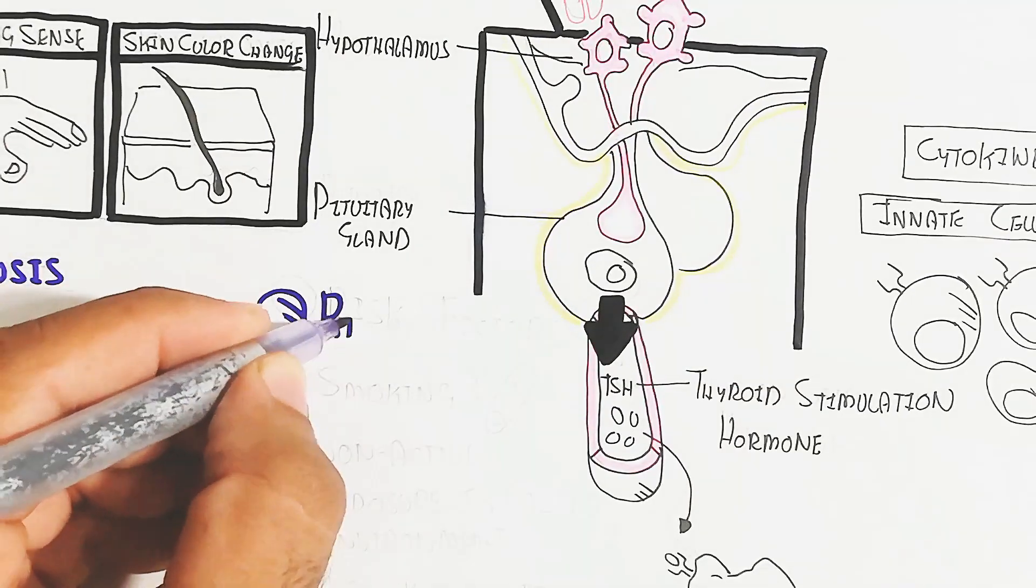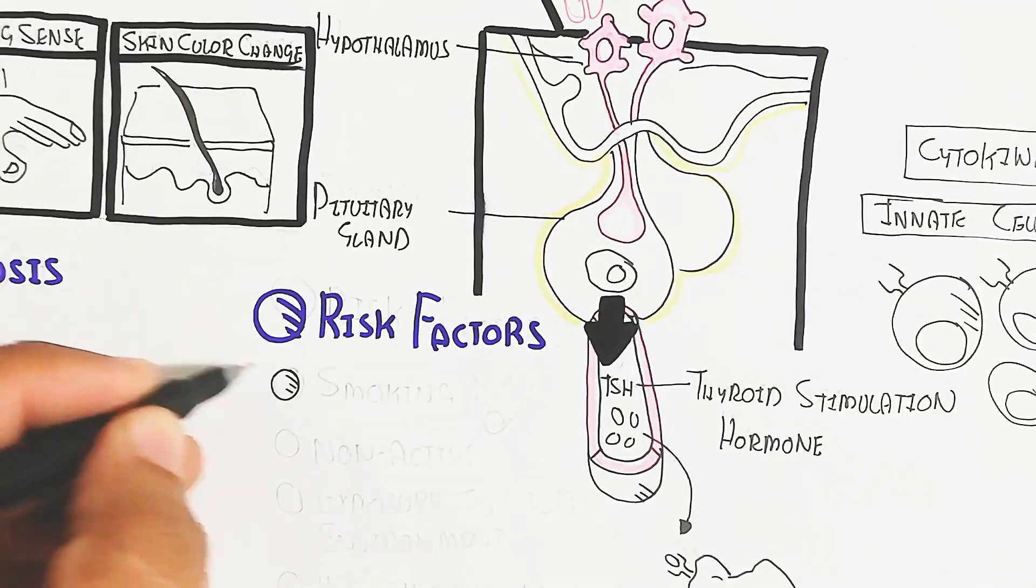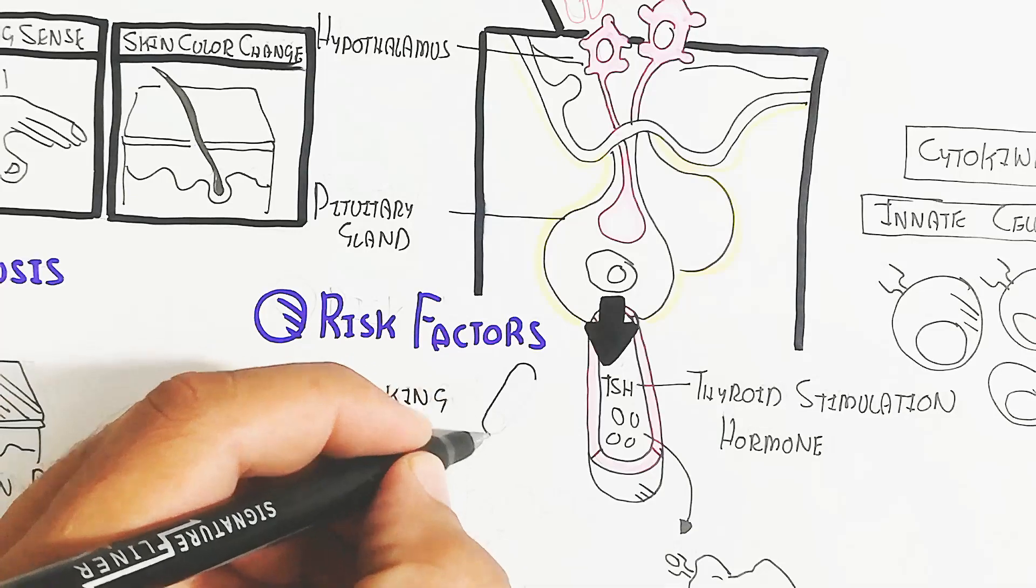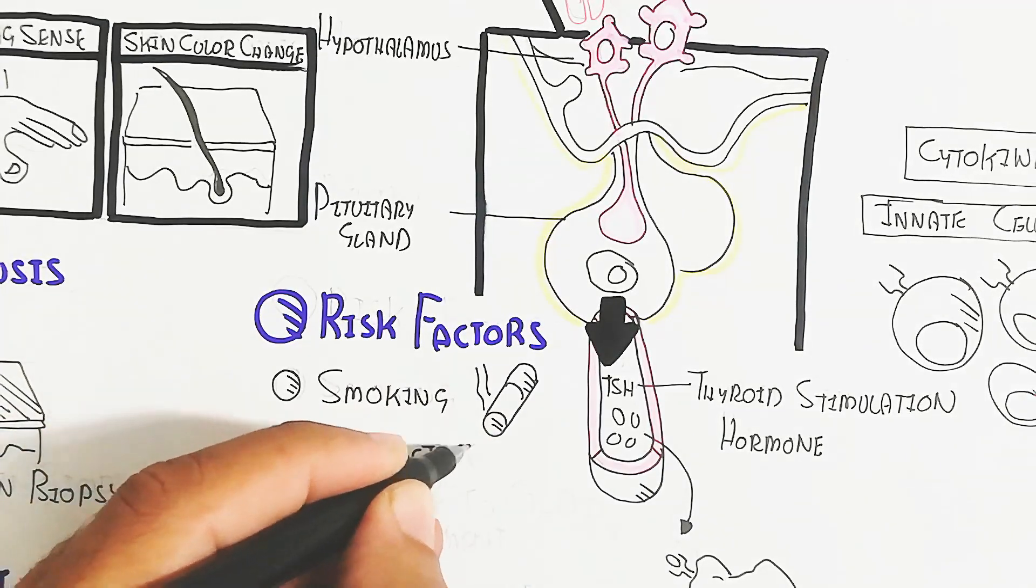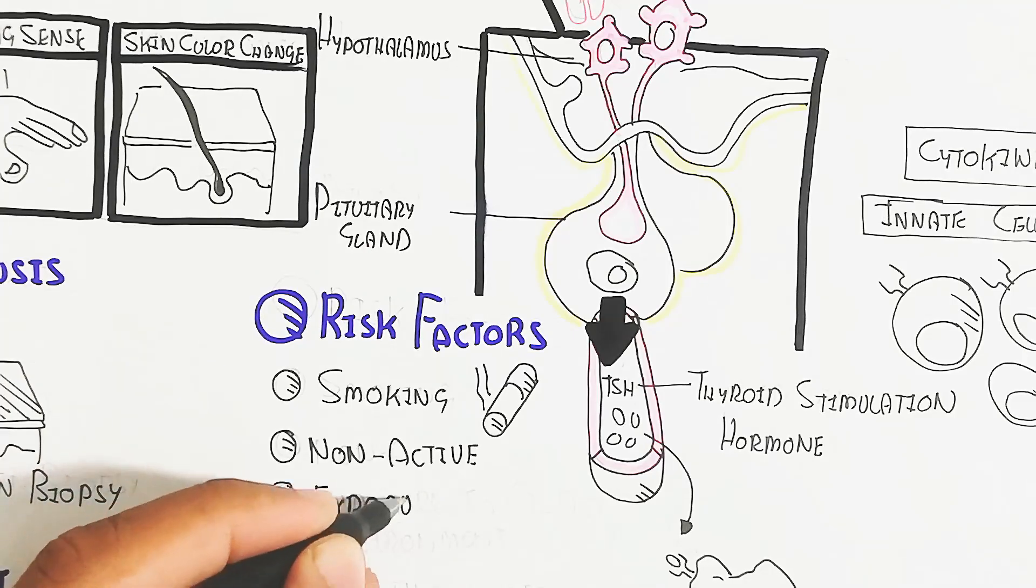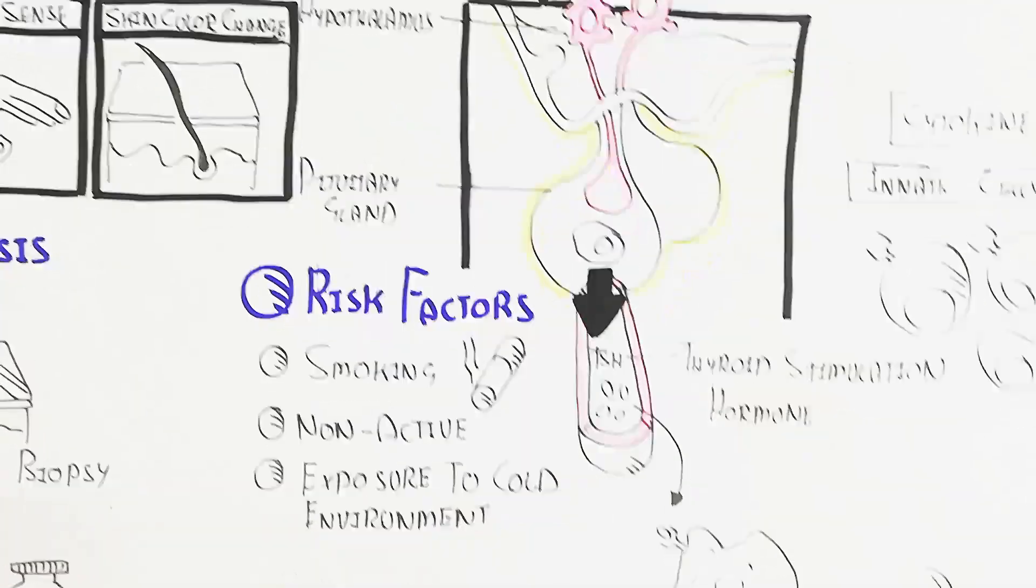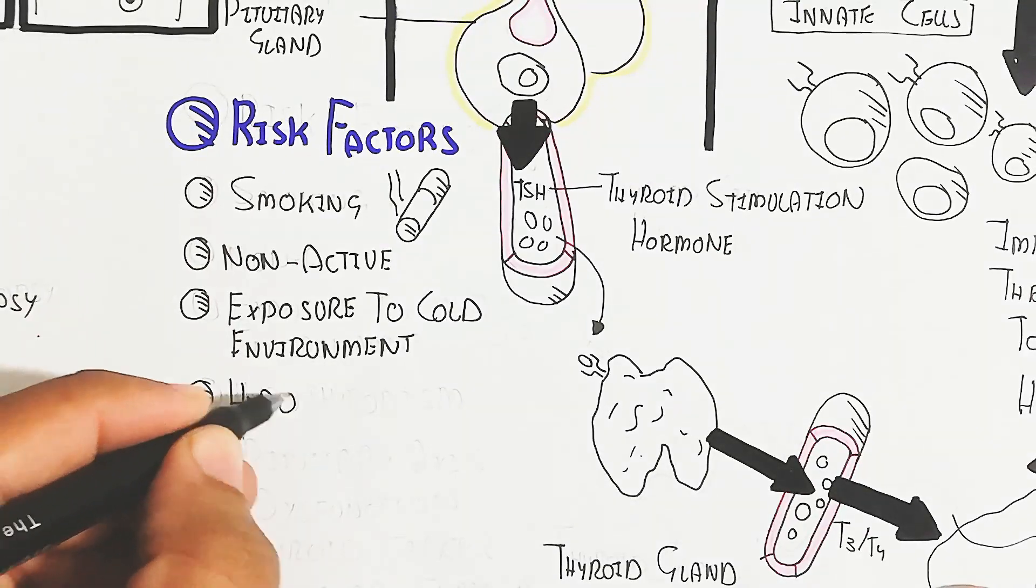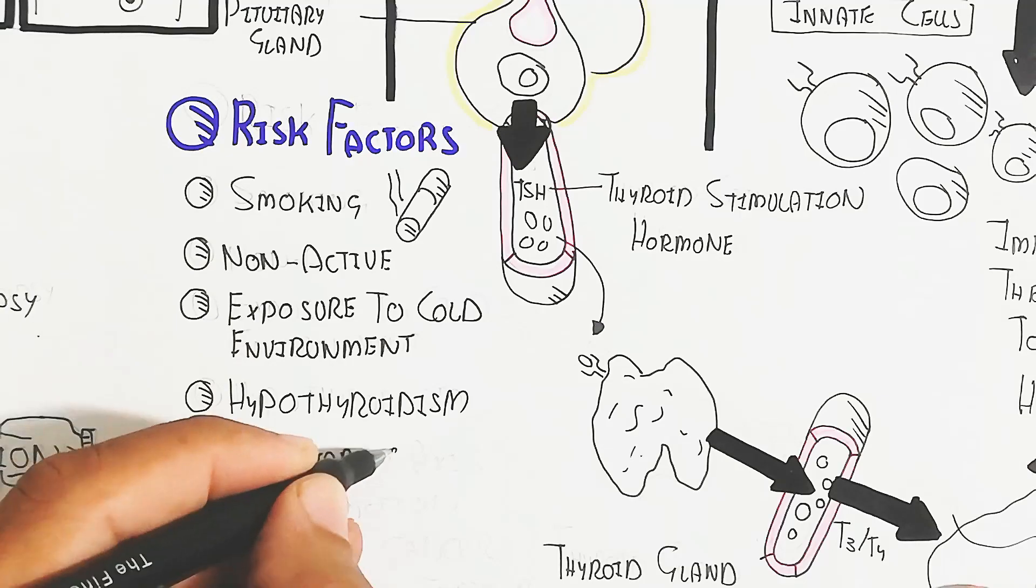So the risk factors, if we will discuss the risk factor and how to prevent the Chilblain, that is important. The smoking, which also leads to vasoconstriction in the periphery, and non-activeness, it means the exercise decrease will lead to Chilblain. So the exercise is the remedy for the decrease of the Chilblain problem.